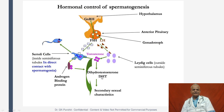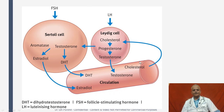Spermatogenesis is under the control of FSH and LH. The testosterone produced by the Leydig cells transfuses into the Sertoli cells and is also transported to the epididymis by androgen binding protein. Testosterone is also converted into dihydrotestosterone, which is responsible for secondary sexual characters, and is partially converted into estradiol. In the Leydig cell, cholesterol converts into progesterone and then testosterone. Testosterone diffuses into the Sertoli cell and by the enzyme aromatase is converted into estradiol; it is also converted into dihydrotestosterone, and both may enter the circulation.